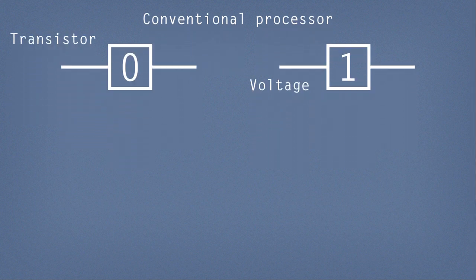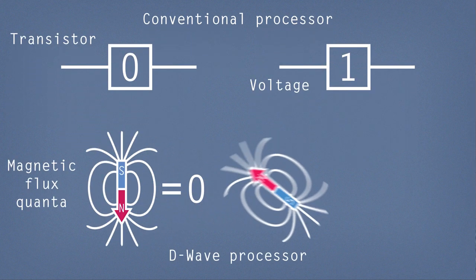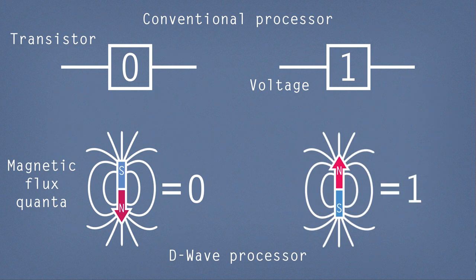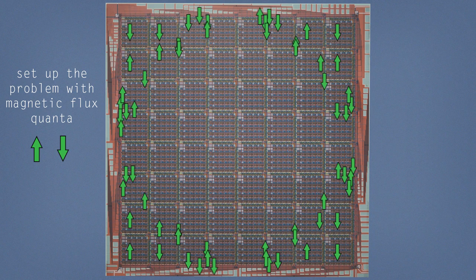In this processor that information is actually encoded in small magnetic fields called single flux quanta or quanta of magnetic flux. When we're programming the processor we load hundreds of thousands of these flux quanta into the chip into various circuits.